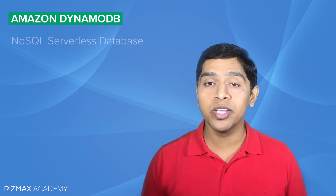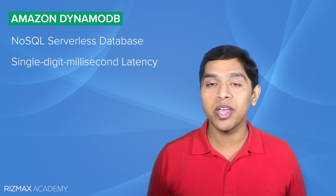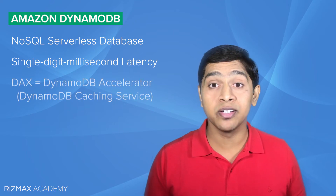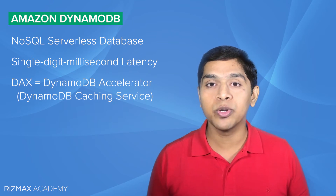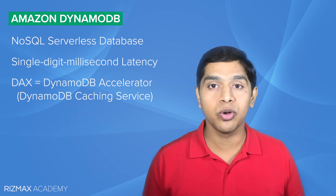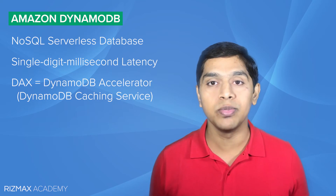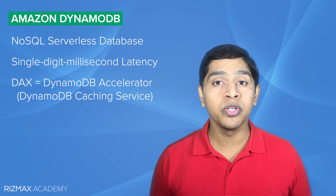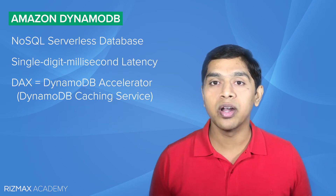Now let's look at Amazon DynamoDB. DynamoDB is a highly scalable, high-performance NoSQL database that you can use in your serverless applications. DynamoDB can scale on-demand to support virtually unlimited concurrent read-write operations with response times in single-digit milliseconds. You also have DynamoDB DAX, or DynamoDB Accelerator, which further brings down response times from milliseconds to microseconds — it's a caching service provided by Amazon on top of DynamoDB. We'll look at DynamoDB in more detail later in this course during our hands-on exercise.